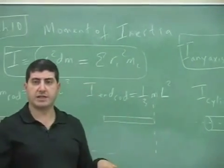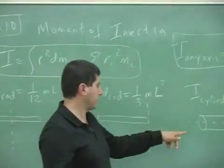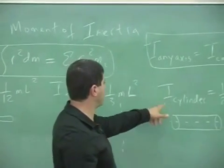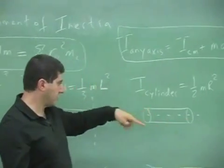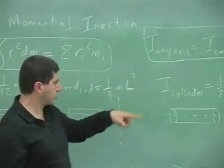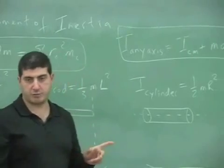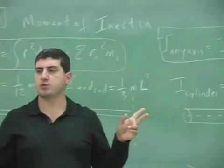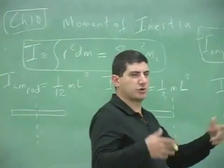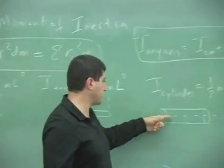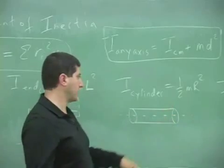Last week we did a lab specifically on moment of inertia, and here are some of the things we saw. We saw that the moment of inertia of a cylinder about an axis going through its center, as it rolls, is equal to half mR squared. We call that one I-ZZ — though you could call it I-XX or I-YY depending on how you define the axis.